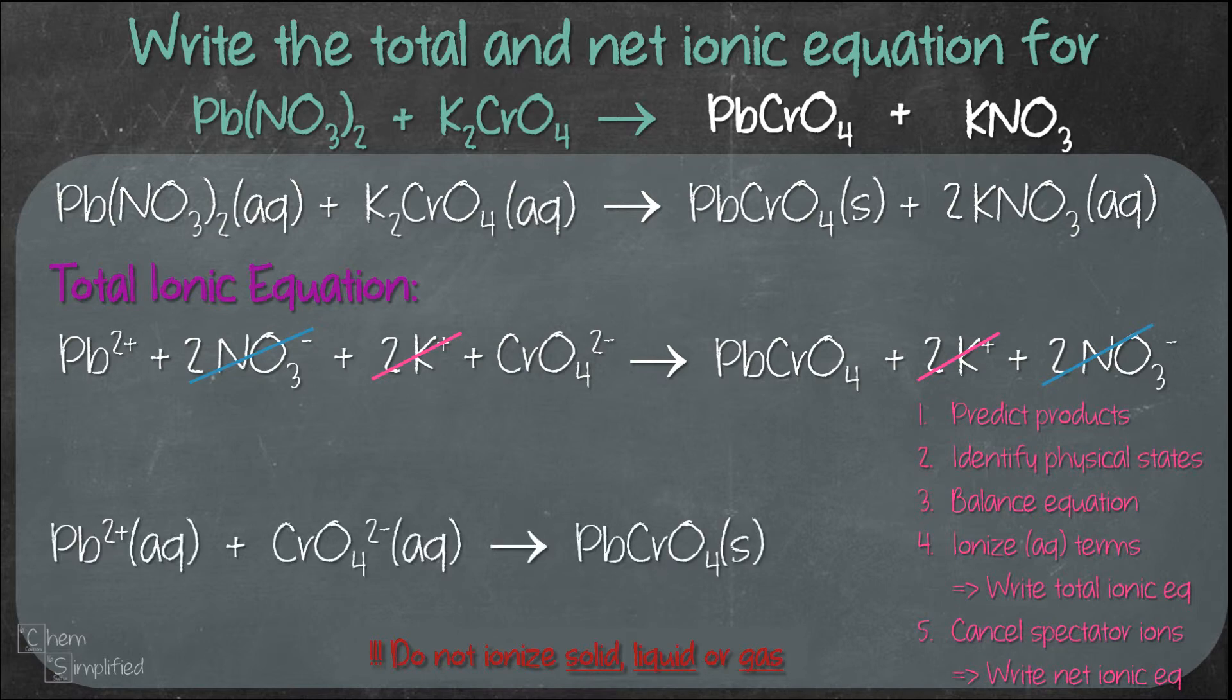We get Pb²⁺(aq) + CrO₄²⁻(aq) → PbCrO₄(s). That is our net ionic equation. Before we call it done, let's double check our work. We need to make sure that the number of atoms on both sides are the same, and the charges are also the same. We have 1 Pb on both sides, 1 Cr and 4 O, so we're good. For the charges, we have 2+ and 2−, which adds up to zero on the left. On the right, PbCrO₄ is a neutral compound with zero charge. The total charges on both sides are the same.